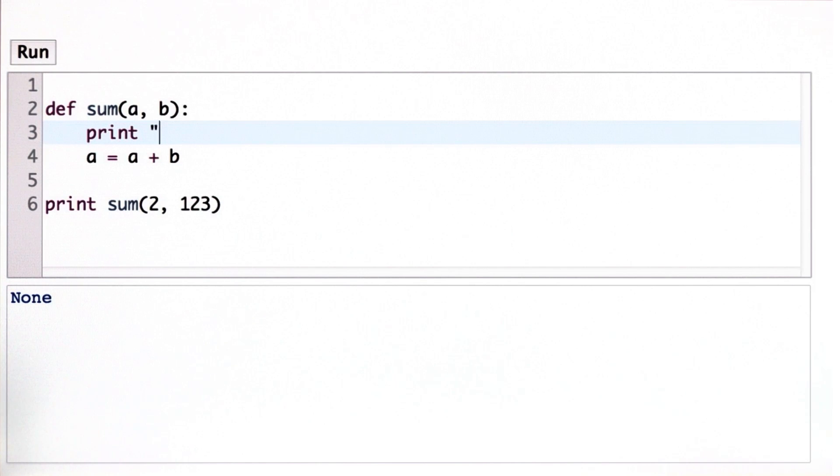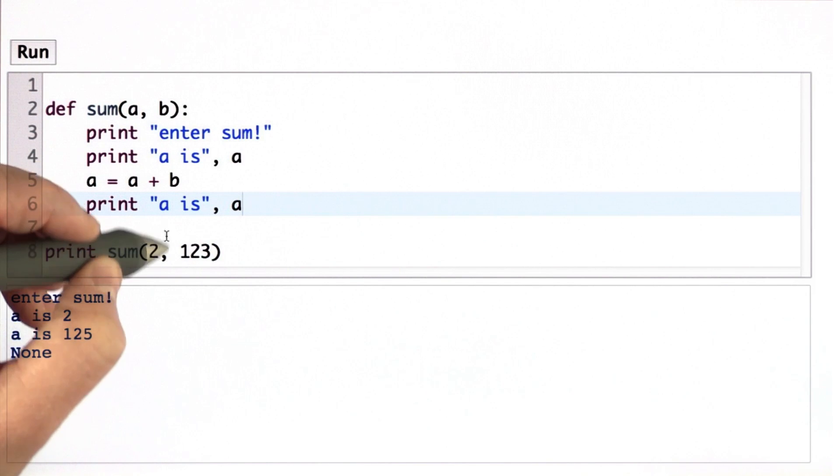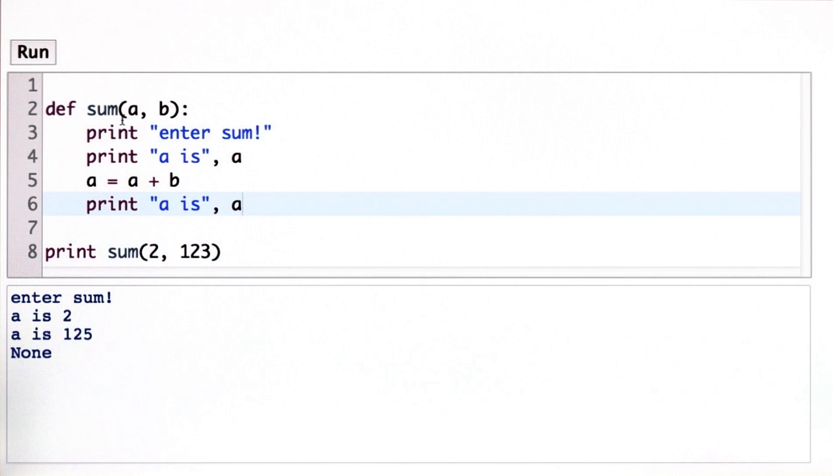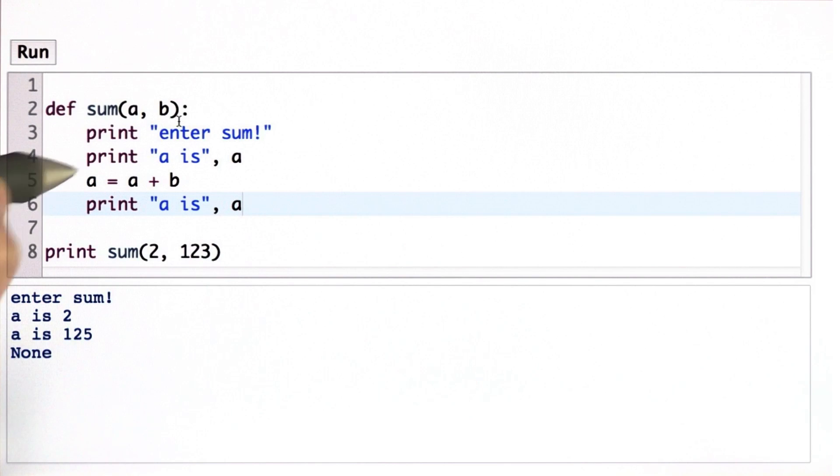Here, I'm going to print that I've entered sum, and I'll print the value of a, and I'll do the same thing again. So now when we run it, we see that we enter sum. When we enter sum, the value of a is 2. That was the value passed in as the first parameter. The value of b is 123. That was what we passed in as the second input.